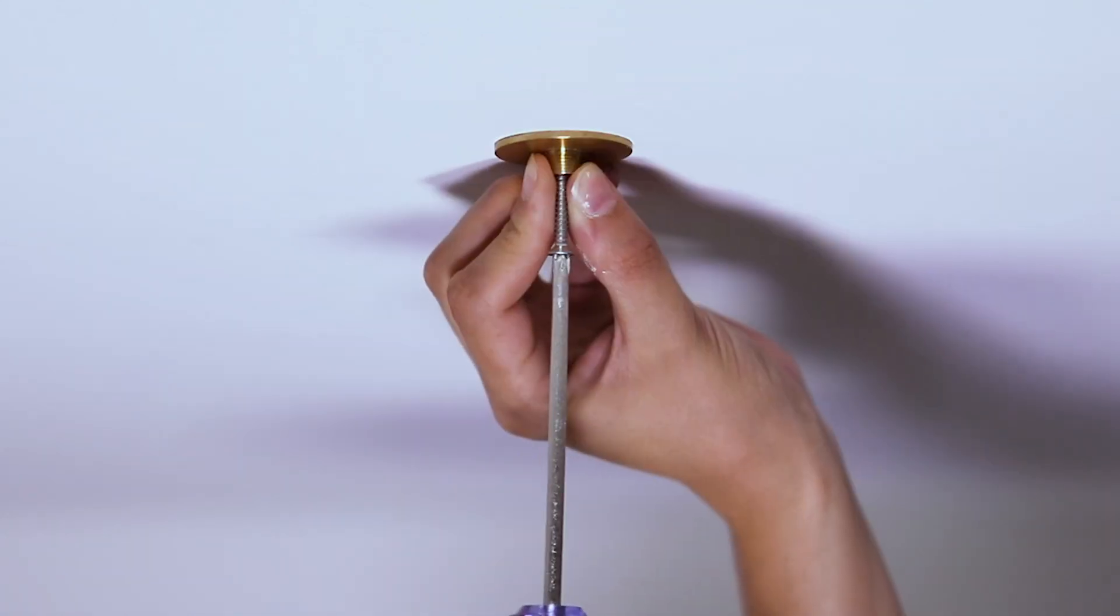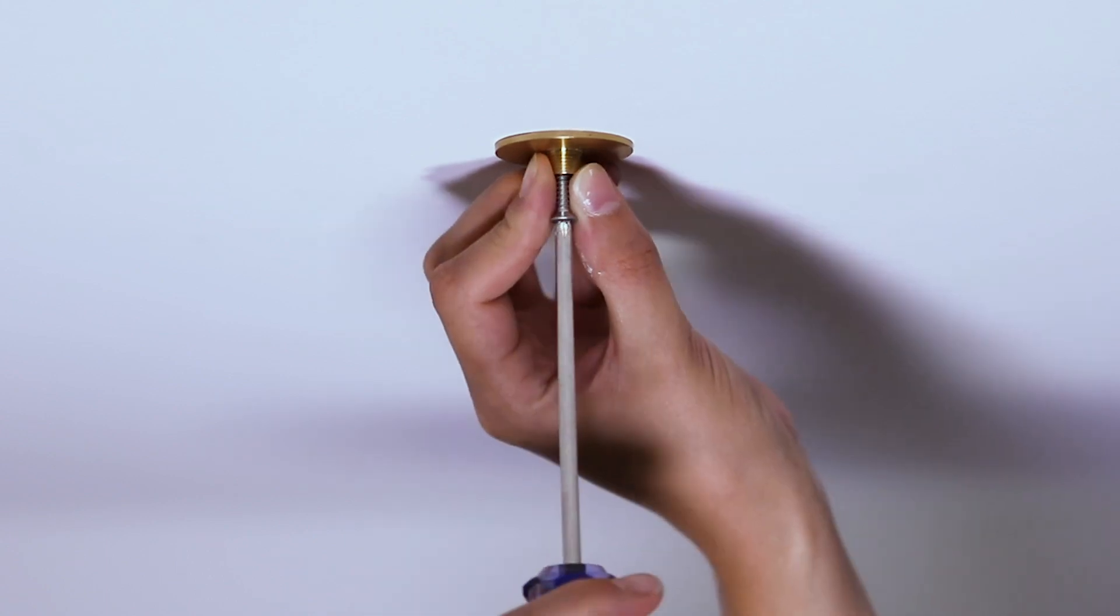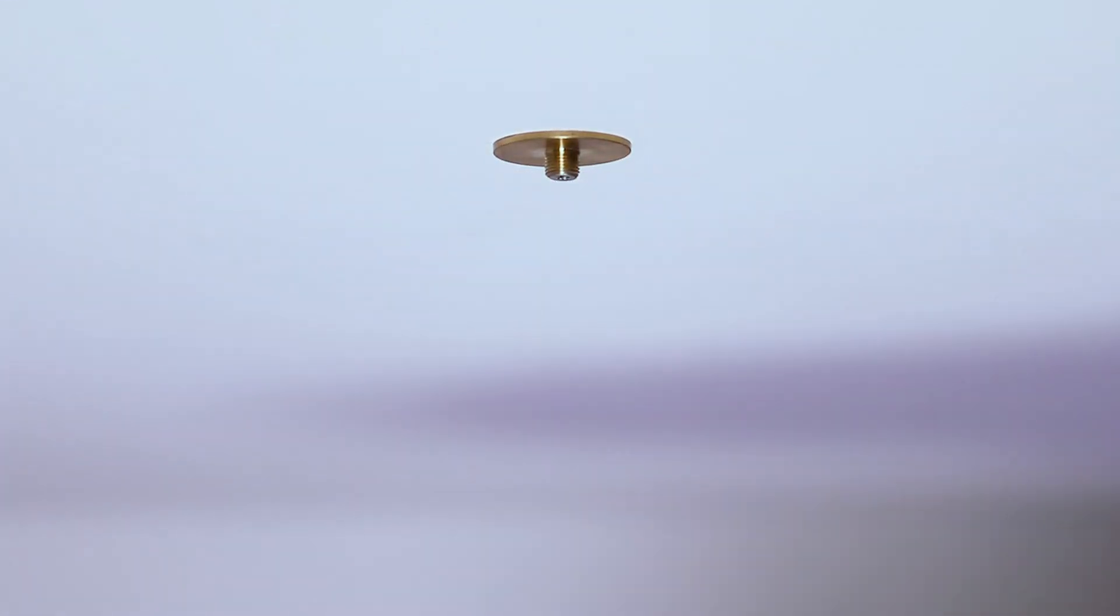Next, take the back plate and the screw and mount the back plate to your ceiling or wall by inserting the screw into the anchor.